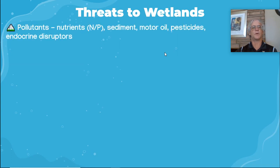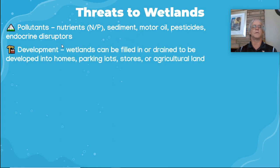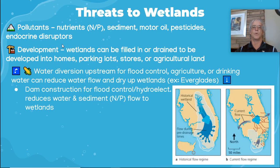Threats to wetlands include pollutants such as nitrogen, phosphorus, nutrients, sediment, motor oil, and pesticides — motor oil leaks from cars and washes into wetlands during rain. Development: wetlands can be filled in or drained to be developed into homes, parking lots, stores, or agricultural land. Water diversion projects for flood control, agriculture, or drinking water — dams such as at the Everglades — have dried up that historically large area, reducing water and sediment flowing into the wetlands and wiping out most of the Everglades. Overfishing disrupts the food web, decreasing fish predators and increasing prey.